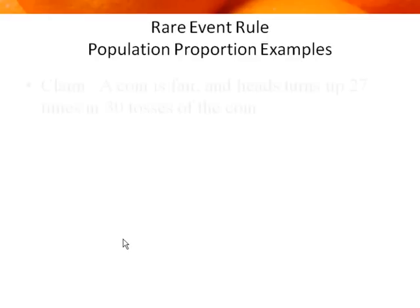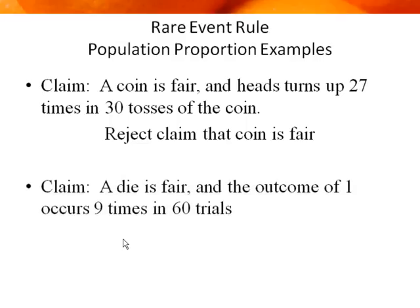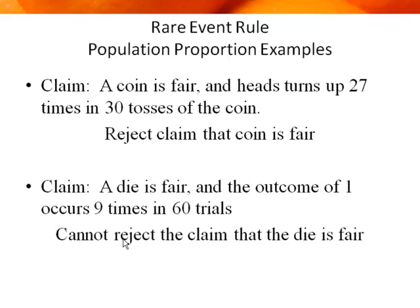This rare event principle is what we'll use in hypothesis testing. For example, the claim is that a coin is fair — 50% heads, 50% tails — but heads turns up 27 times out of 30 tosses. That would be very rare, so we reject the claim that it's a fair coin. This is the rare event rule. Another example: if a die is fair and rolled 60 times, we'd expect roughly 10 of each number. If rolling a 1 happens 9 times out of 60, that's around 10 — not rare — so we cannot reject the claim that the die is fair.